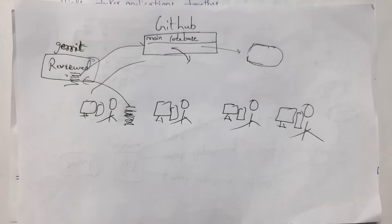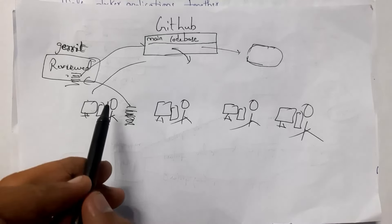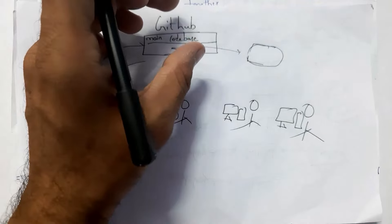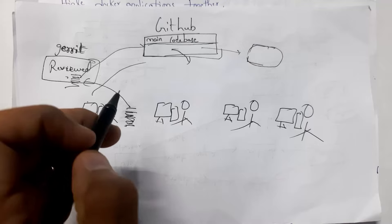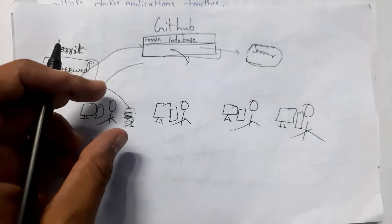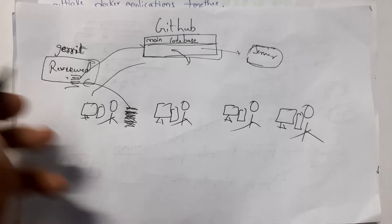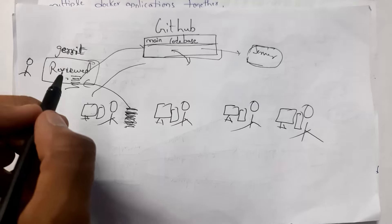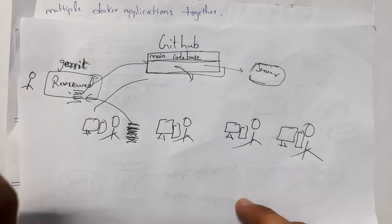Next, I will explain what is Gerrit. For example, let us say there are four developers developing an application. Each developer will write code in their own system, and there is a GitHub server with a main codebase — a place where the complete project code is stored. Whenever code is placed in the main codebase, it is automatically tested and then deployed to the server. But developers do not place code directly into GitHub. First, that code is reviewed by senior developers to check whether it is correct. Only if the code is correct is it placed in the main codebase. So developers first send their code to Gerrit software.